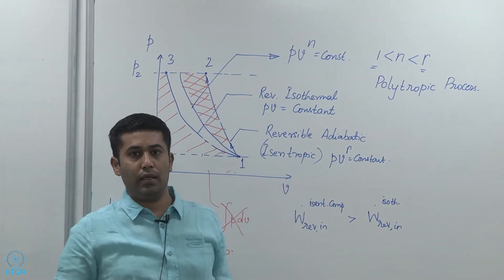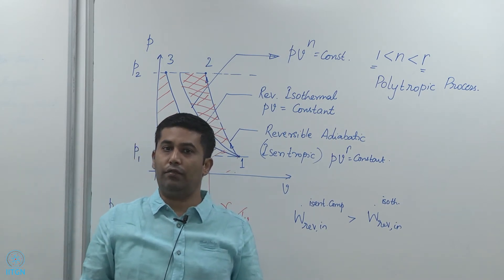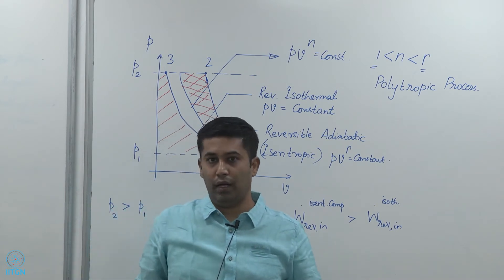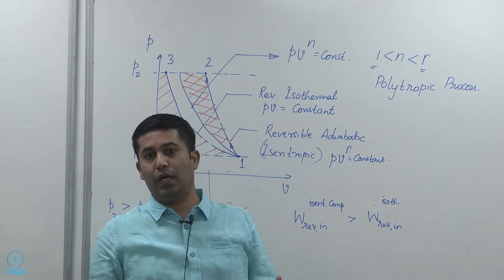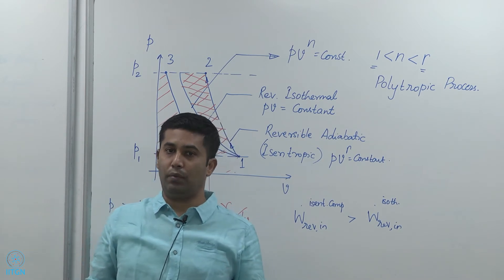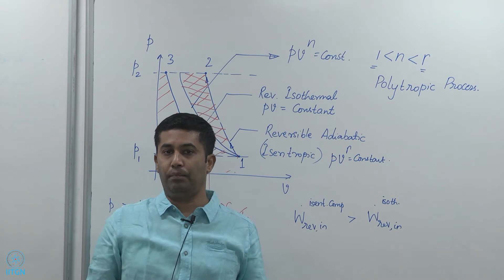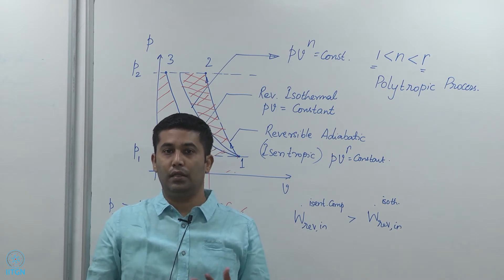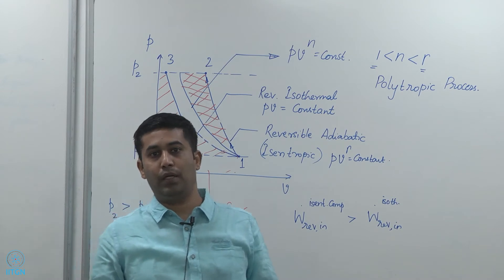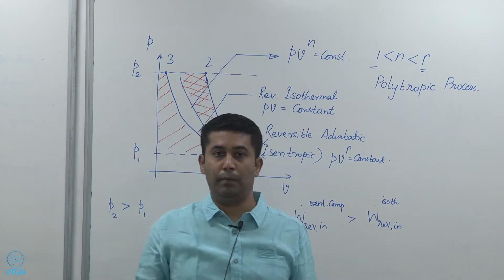Most engineering compressors available today are in fact polytropic compressors. The n value cannot be known a priori — it depends on the particular compressor, the operating conditions, the design of the compressor, and the flow rate of the gas. But we can assume that the n value will be somewhere between 1 and gamma.